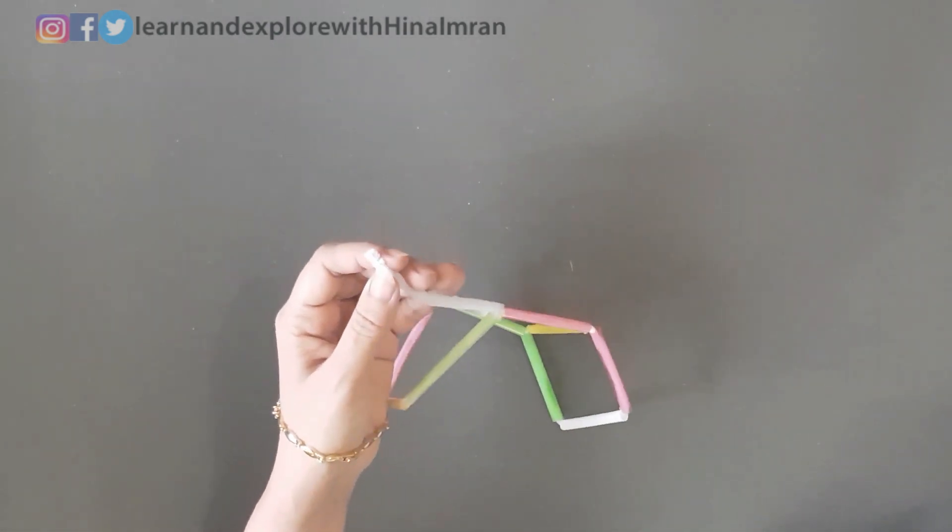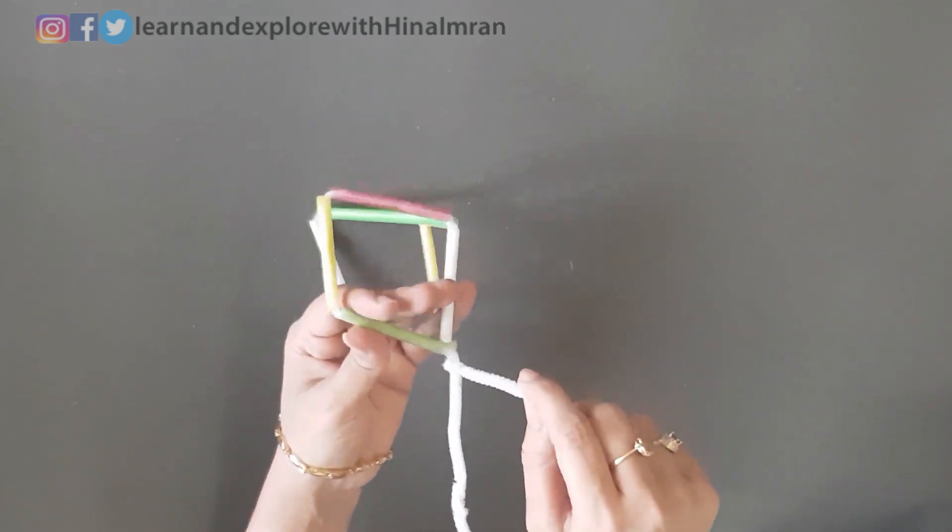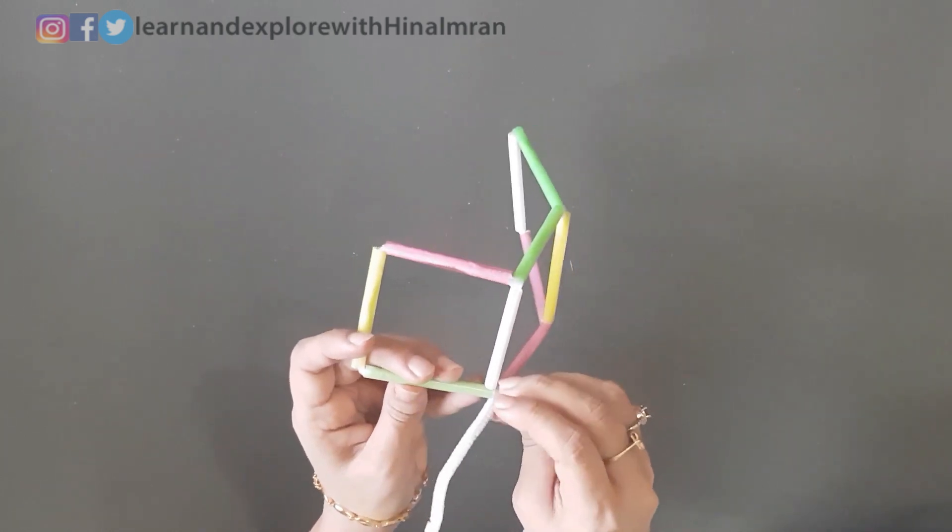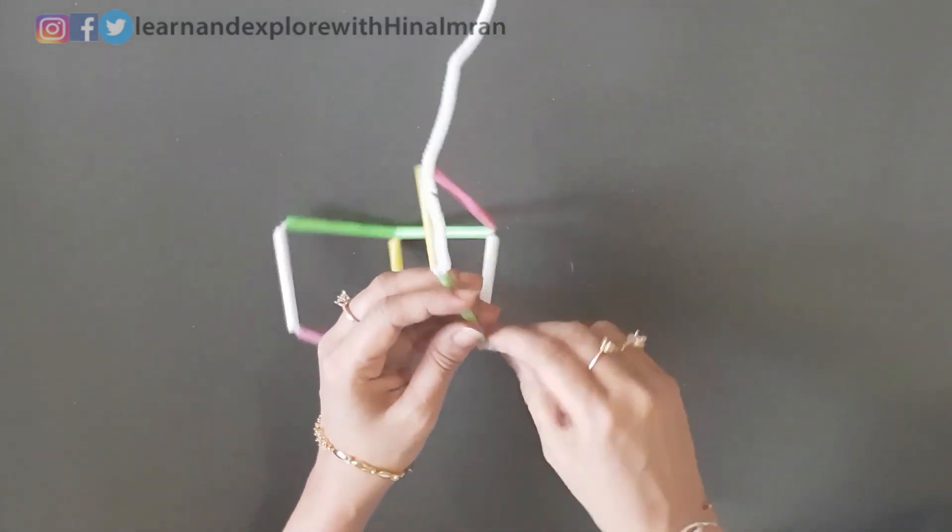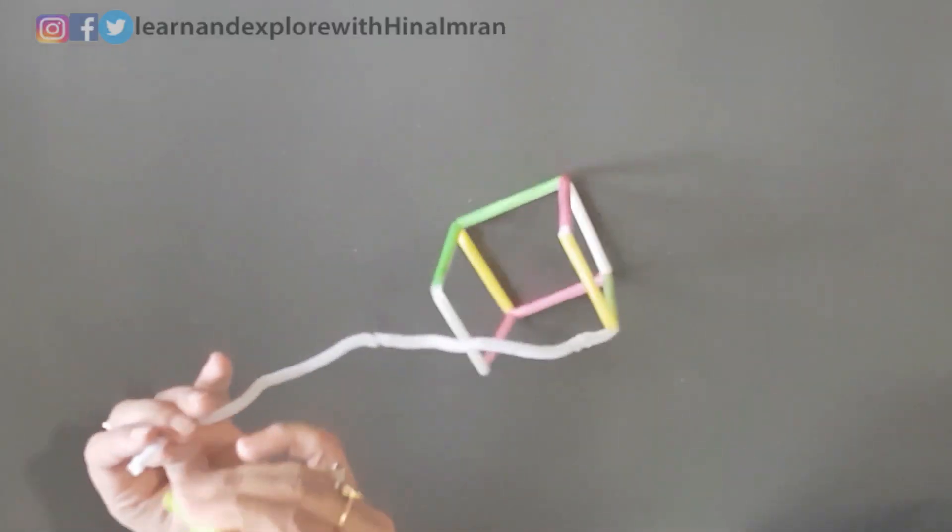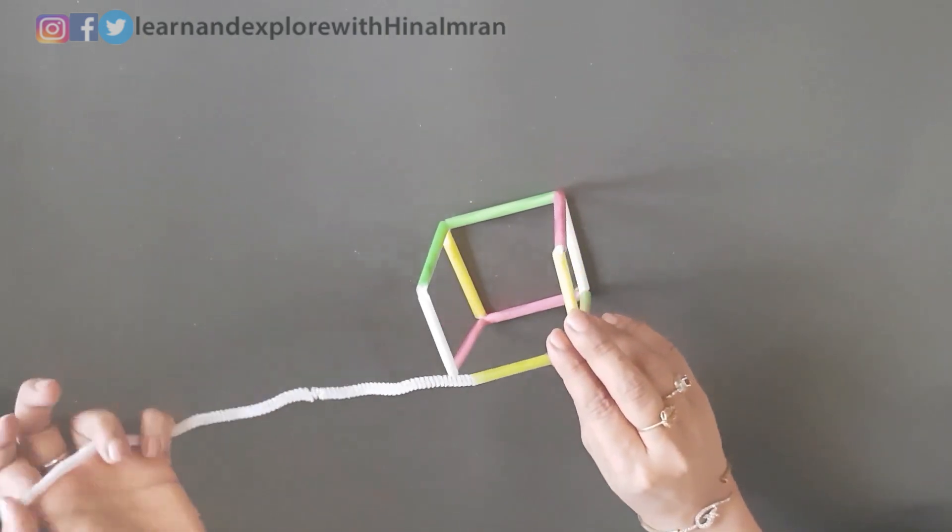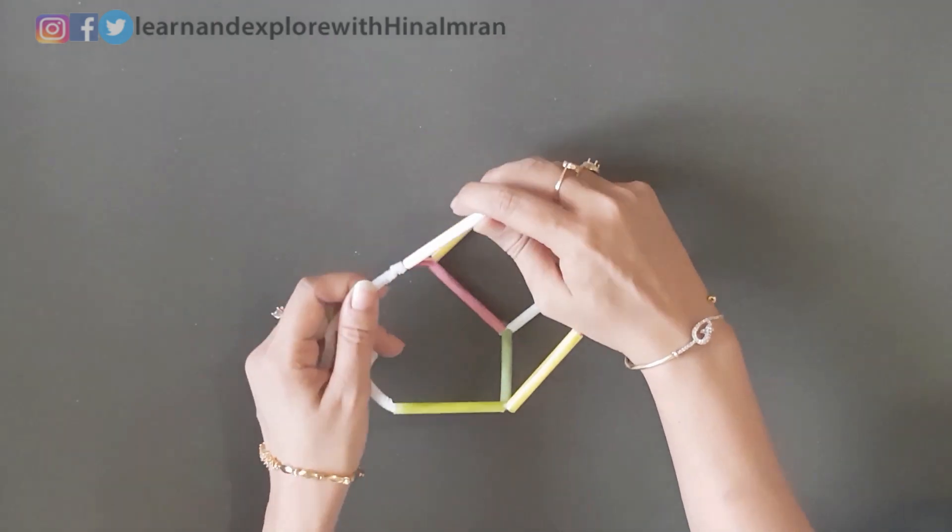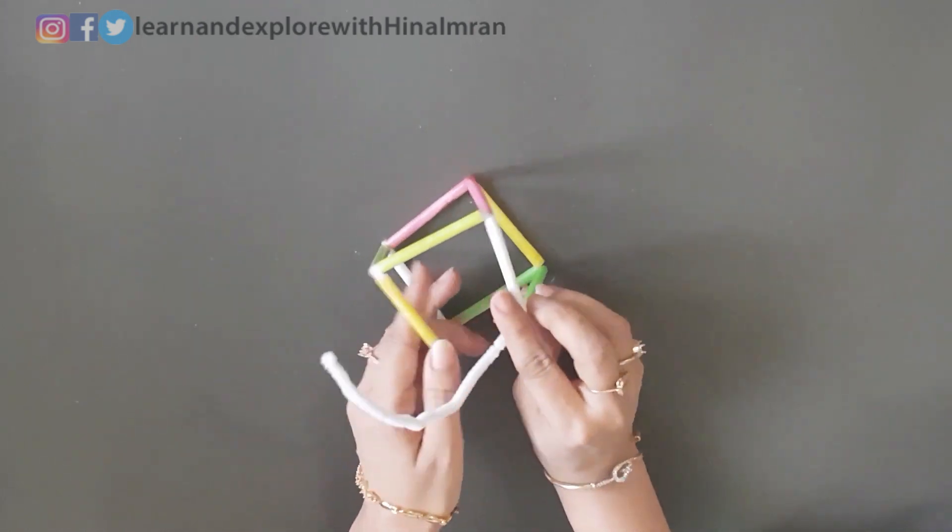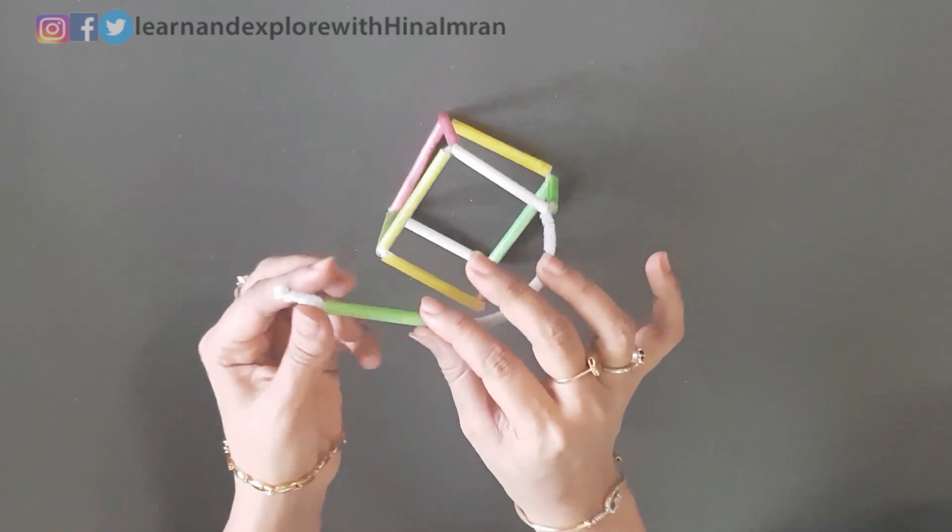You need to insert it again so that it comes out from the other end. Just like stitching. Insert one more straw. Make it go through the straws again so that it passes out like this. Oh we nearly have a cube. Now we only need one more straw to finish it off.